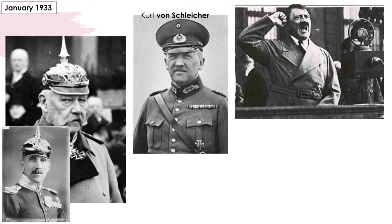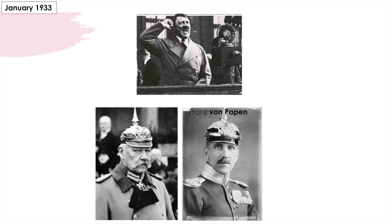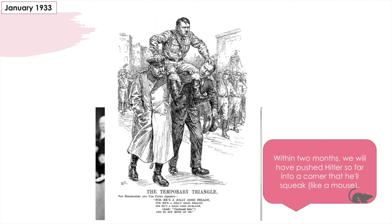On the 30th of January, von Papen returned. Von Papen told Hindenburg that if a new government was not formed by 11 o'clock, the army would march and a military dictatorship under Schleicher loomed. Von Papen also gave Hindenburg a solution: make Hitler the chancellor, von Papen the vice-chancellor, and Hindenburg the president — and then they could make all the decisions themselves and merely use Hitler as the figurehead. Von Papen said he had Hitler in his pocket, and that within two months they would have pushed Hitler so far into a corner that he would squeak like a mouse. The ageing president finally agreed, and as a result, on the 30th of January 1933, Adolf Hitler was legally appointed Chancellor of the Weimar Republic.